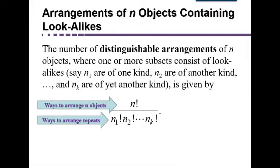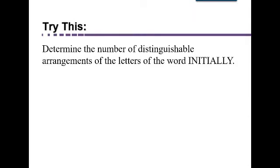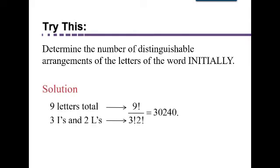So as a formula for the number of distinguishable arrangements of N objects, where one or more subsets consist of lookalikes, we're going to take N factorial based on the total number of objects. And then we're going to divide by the number of ways to arrange the repeats. So let's try an example. Determine the number of distinguishable arrangements of the letters in the word initially. There are nine letters total. One, two, three, four, five, six, seven, eight, nine.